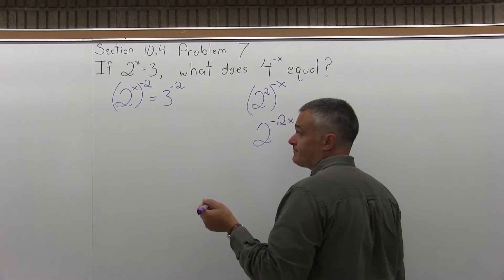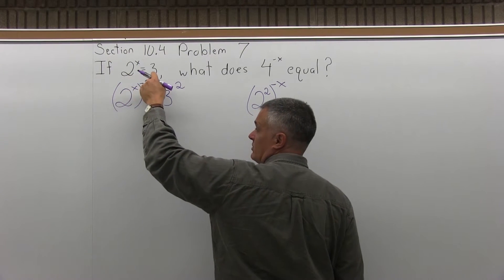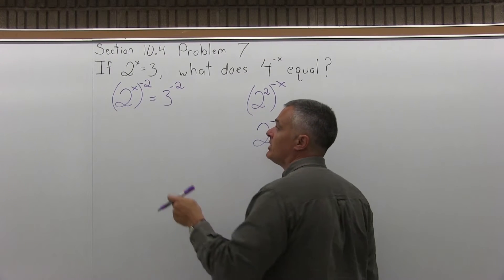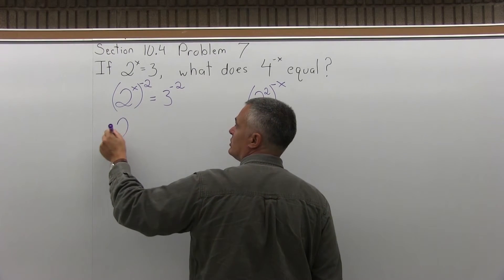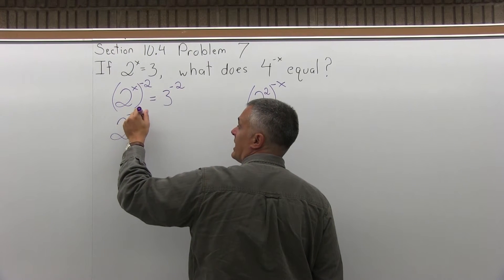And now, on the left side of that equation, 2 to the x power to the negative 2 power, I have a power to a power. I multiply my exponents. So I have 2 to the x times negative 2 is negative 2x power.